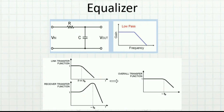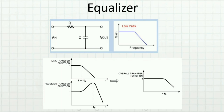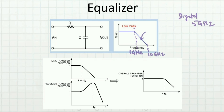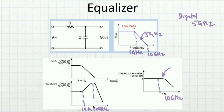Equalizer basically has low gain at low frequency but high gain at higher frequency, so it compensates for the attenuation caused by the channel. For example, if I want to transmit a signal at 5 GHz and the channel has a bandwidth of only 1 GHz, there is attenuation at 5 GHz. So I use an equalizer that provides gain between 1 GHz and 10 GHz, making the overall gain flat till 10 GHz. When I want to transmit data at 5 GHz, I can do so without significant attenuation.